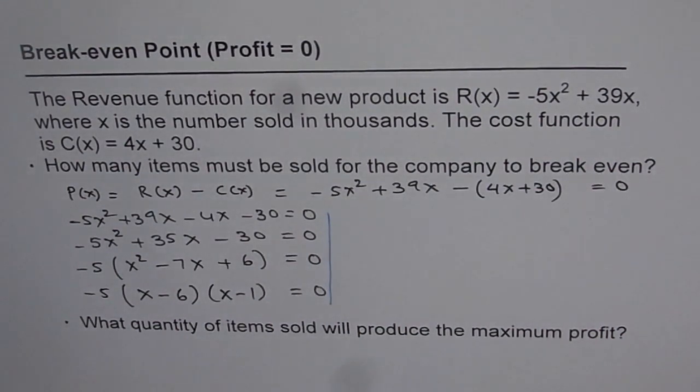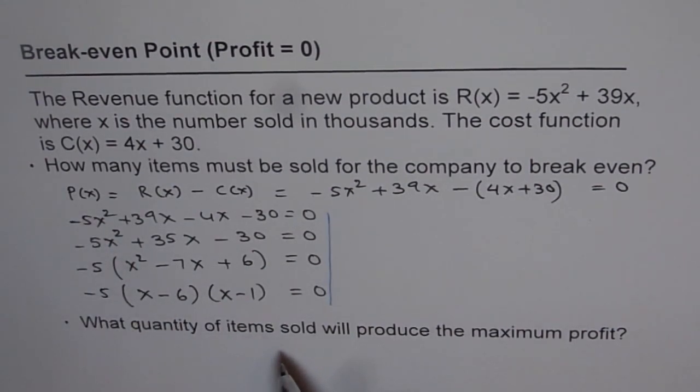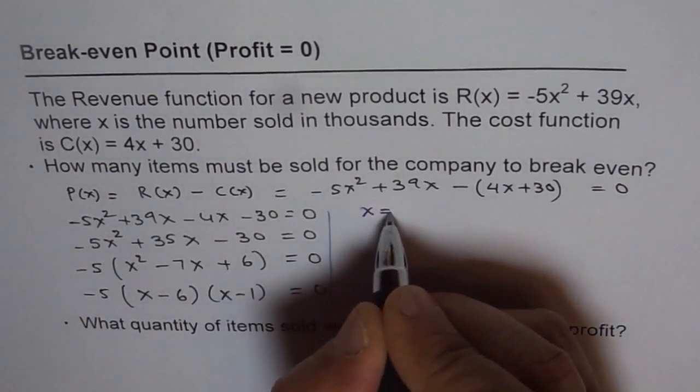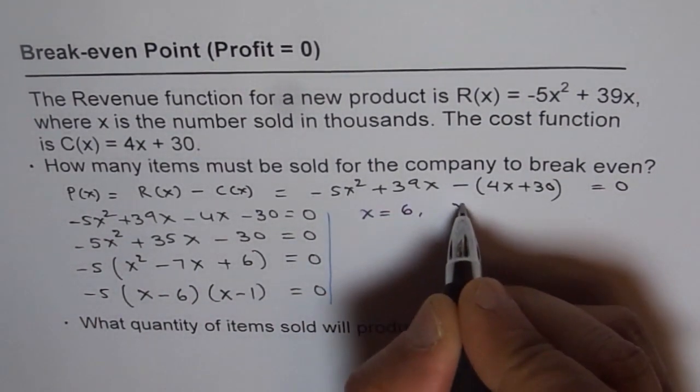So the answer for us here is at x equals 6 and x equals 1, profit will be 0. Profit function will be 0. So that means we get 2 answers: x equals 6 and x equals 1.